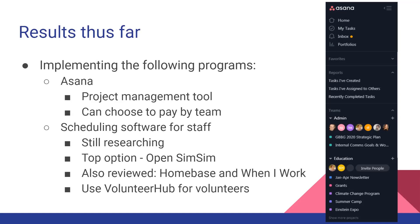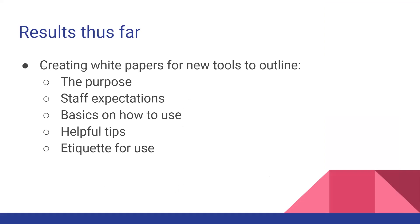The next tool we're looking to implement, but still researching, is scheduling software for staff. Right now each department does scheduling differently — some use a paper calendar, some use Excel — but none of it is live so people can change things as needed. We're still researching what will work best across departments. Our top free software option right now is Open Shifts. We also looked at Homebase and When I Work. This is just for staff scheduling — we already use Volunteer Hub for our volunteers.